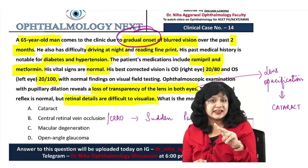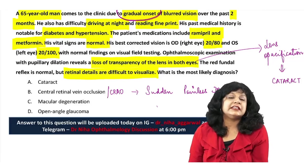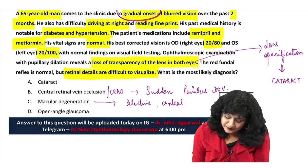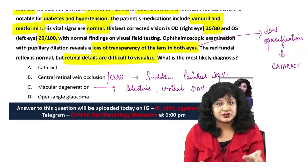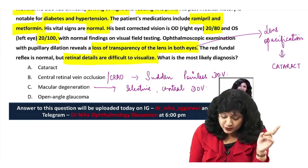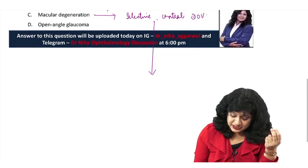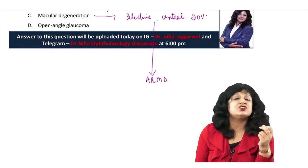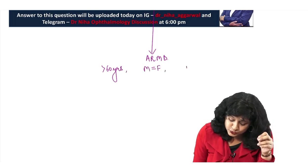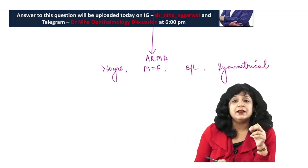Macular degeneration leads to selective central loss of vision. At age 65, this would be age-related macular degeneration (ARMD), which is common after 60 years, equal in males and females, and is usually bilateral and symmetrical.